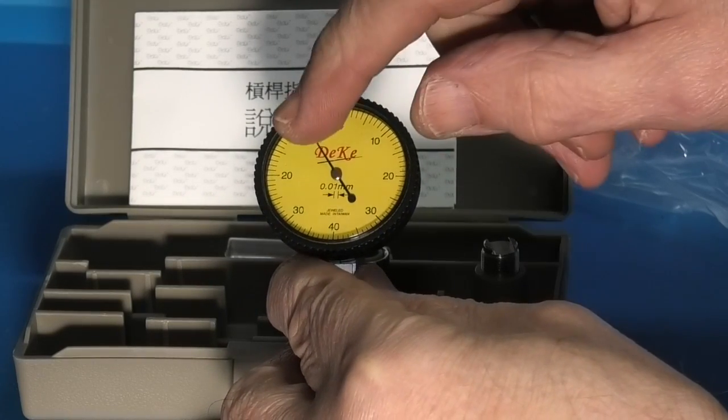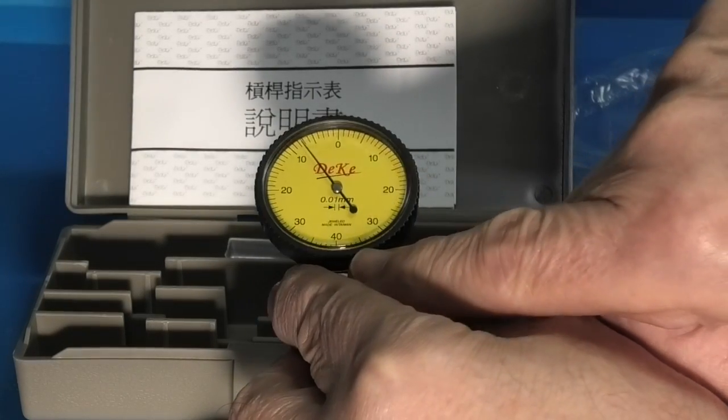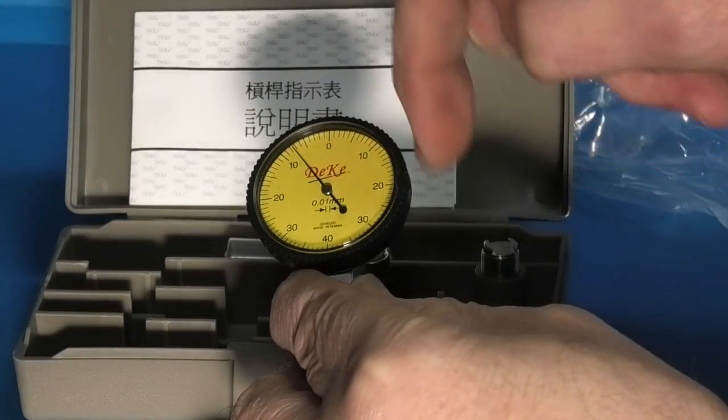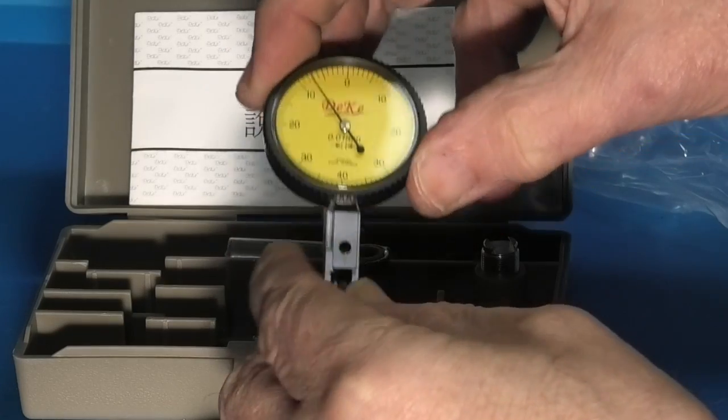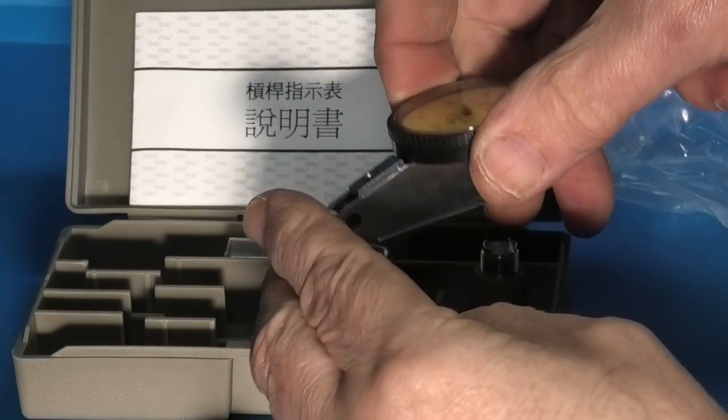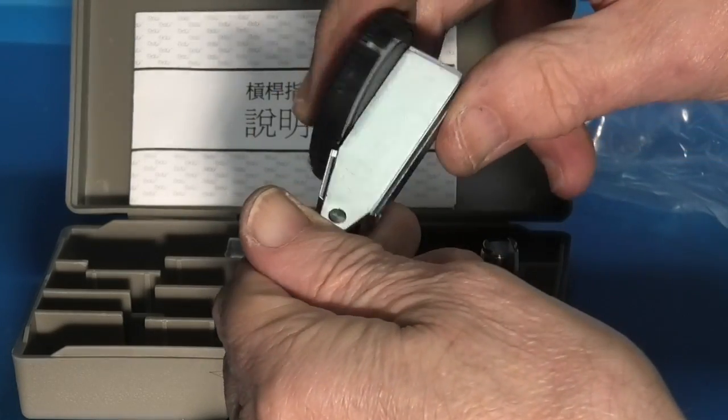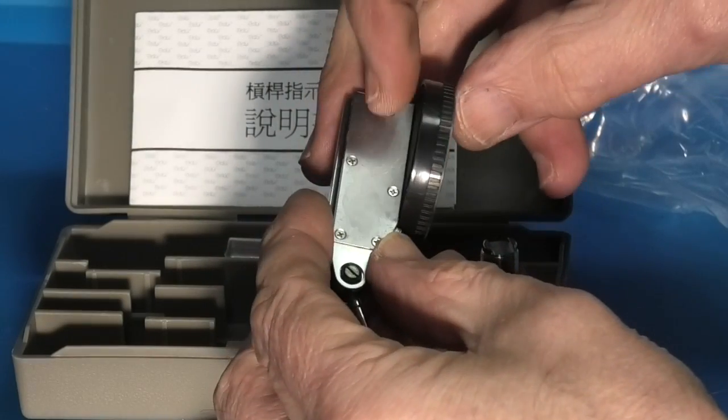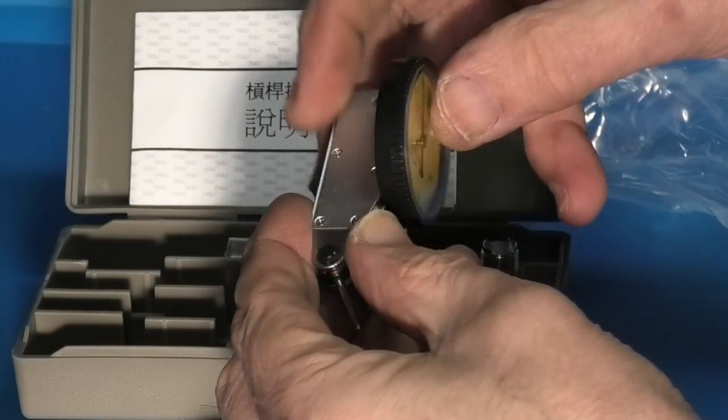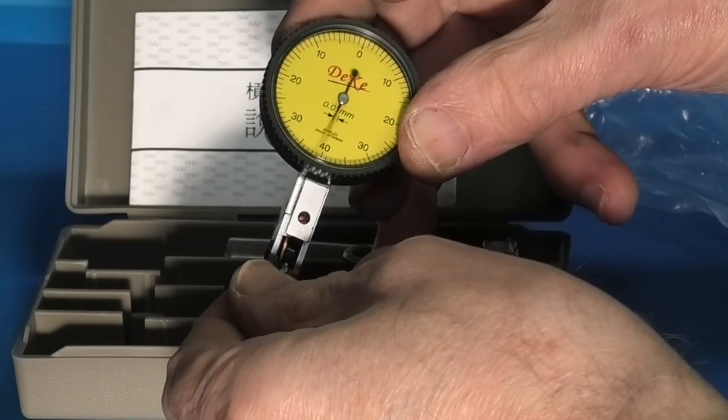The range is from 0 to 0.4 on each side. It has a yellow background. On the end of the probe is a steel ball. Some of them have a lever on here to reverse the direction but this one seems to work either way.